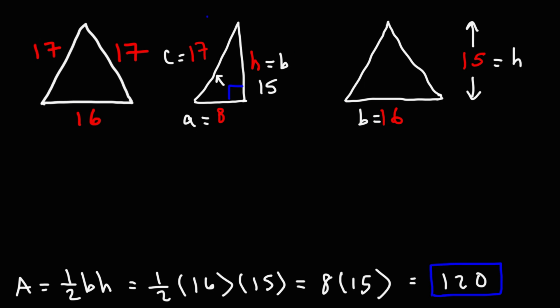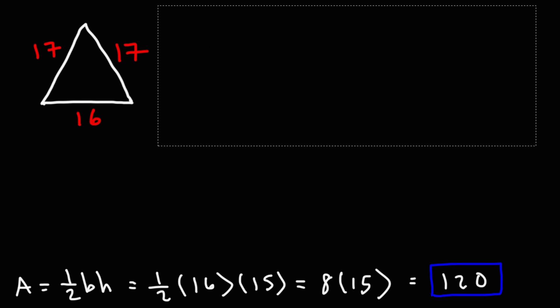Now, let's talk about another way in which we can get the answer. Anytime you know all three sides of a triangle, you could use Heron's formula. And here it is. First, you need to calculate s, which is a plus b plus c, divided by 2.